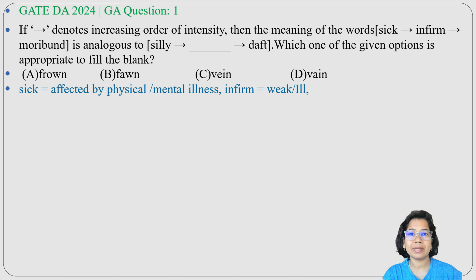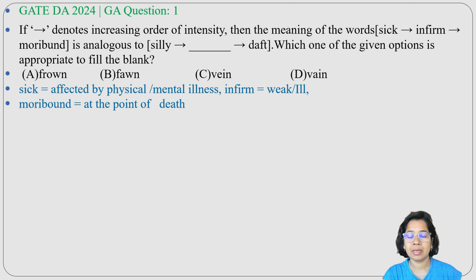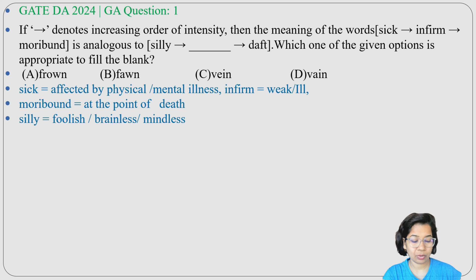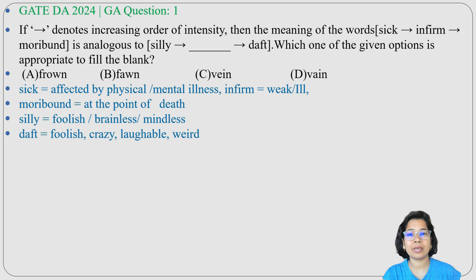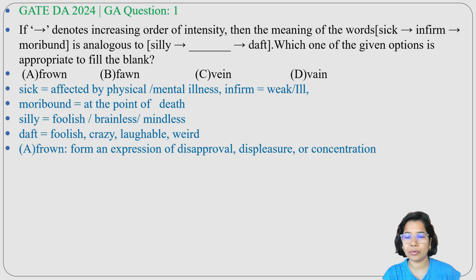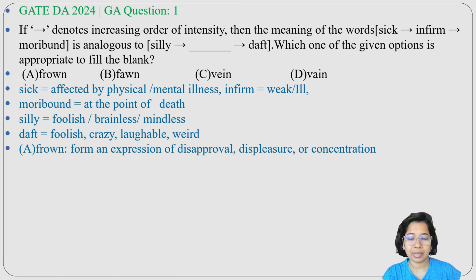So: sick means not well, infirm means by illness one person is weak, and moribund means they are on their deathbed. Now, silly means foolish, brainless, or mindless, and daft means foolish, crazy, laughable, or mad. We have 4 options. Option A: frown — frown means some expression of disapproval, displeasure, or concentration.